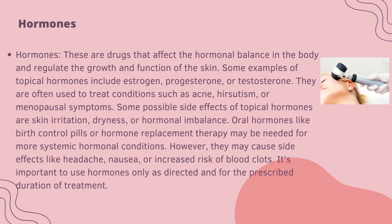Hormones are drugs that affect the hormonal balance in the body and regulate the growth and function of the skin. Some examples of topical hormones include estrogen or testosterone. They are often used to treat conditions such as acne, hirsutism or menopausal symptoms. Some possible side effects of topical hormones are skin redness, dryness or hormonal imbalance. Oral hormones like birth control pills or hormone replacement therapy may be needed for more systemic hormonal conditions; however, they may cause side effects like headache, nausea or increased risk of blood clots. It is important to use hormones only as directed and for the prescribed duration of treatment.